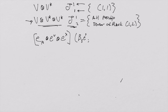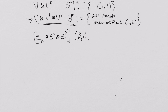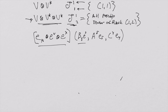So the map takes three inputs: the covector and two vectors. The first piece of the tensor product acts on the first slot, the second piece acts on the second slot, and the third piece acts on the third slot — that's how it has to be.